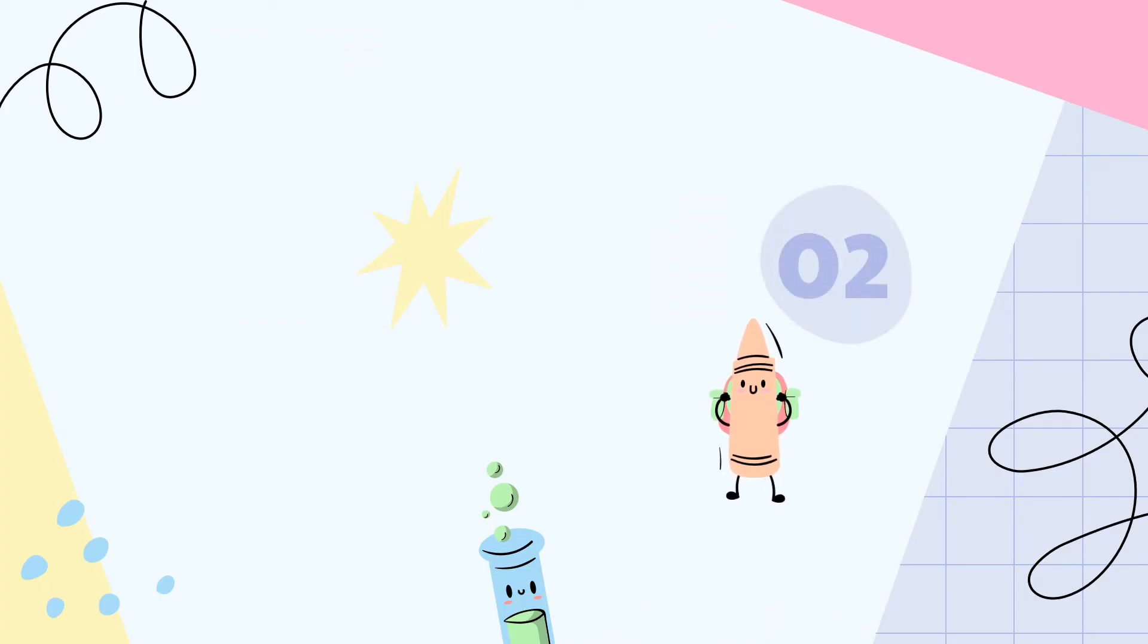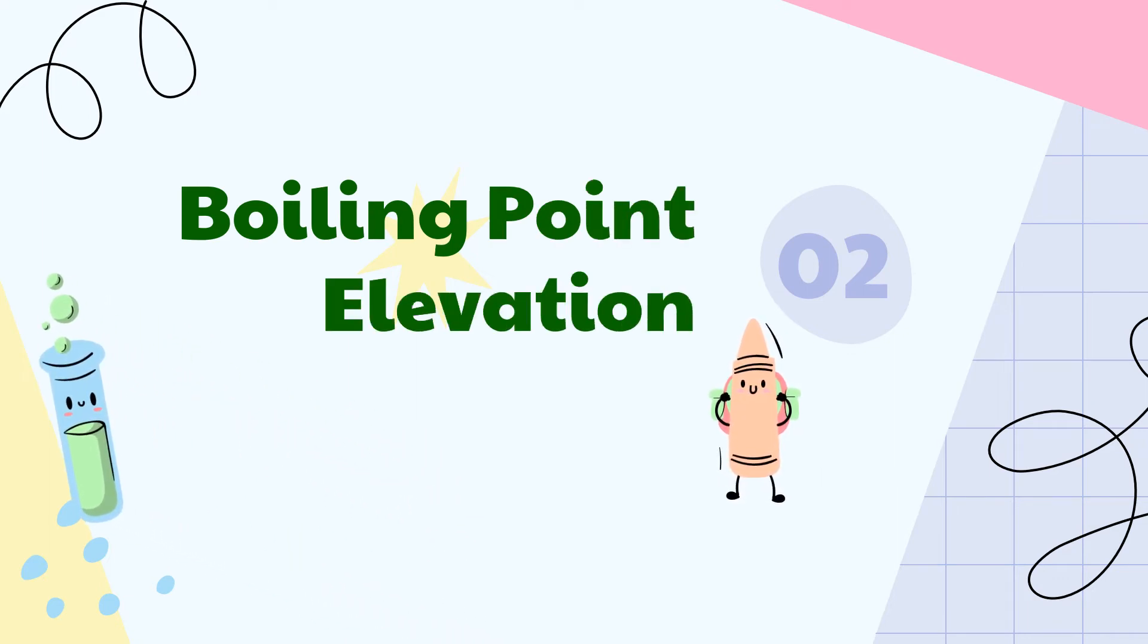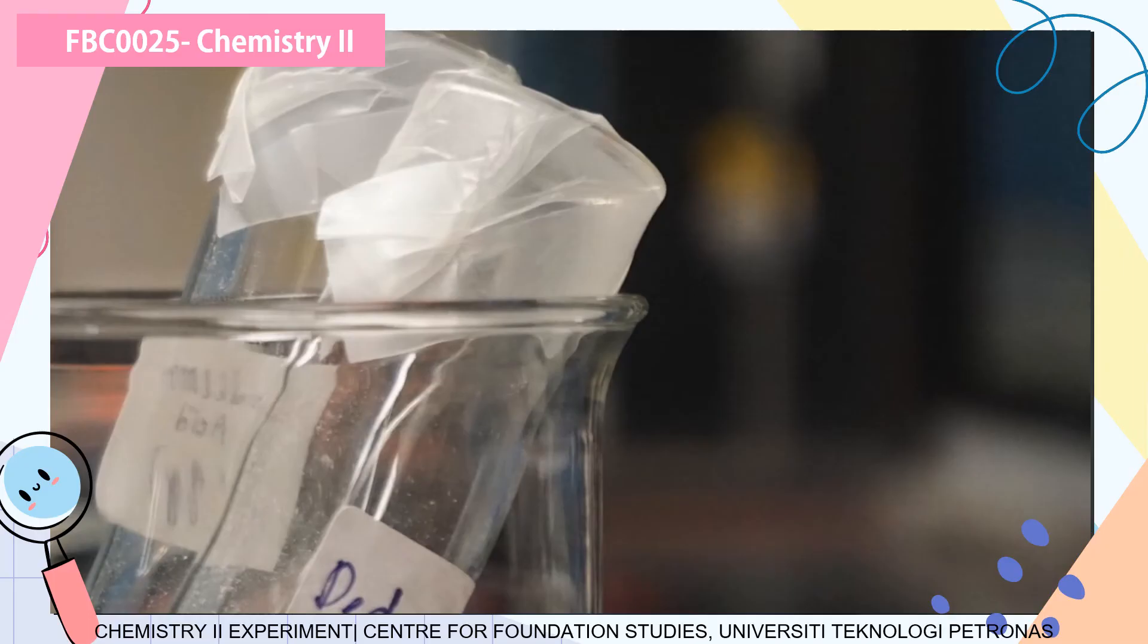That's it for the first part of the experiment. Now let us move on to the second part on boiling point elevation. For this part, we are not going to use lauric acid anymore. We are going to use water and sodium chloride as the solute. Before we proceed, I would like to remind you that you are going to use Vernier LabQuest for data collection and you must set it up before you start this second part.